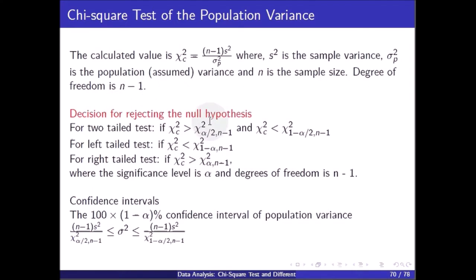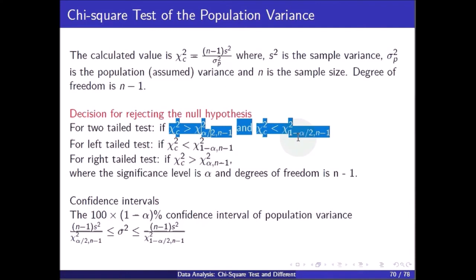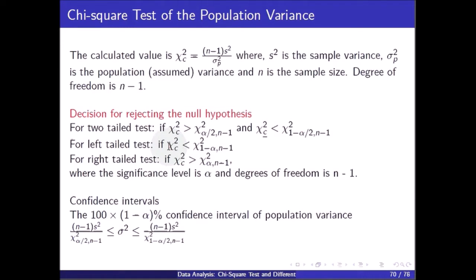For the decision on rejecting the null hypothesis: in the two-tail test, reject if chi square is greater than chi square(alpha/2, n-1) or chi square is less than chi square(1 - alpha/2, n-1). For the left-tail test, reject if the calculated chi square is less than chi square(1 - alpha, n-1). For the right-tail test, reject if the calculated chi square is greater than chi square(alpha, n-1), where alpha is the significance level and degrees of freedom is n minus 1.